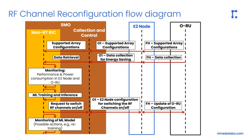The data is used to monitor the power consumption and performance related to various open radio unit configurations under different cell loads. The captured data are first used to train the machine learning model, and after the training phase, used for inference. In the inference phase, the ERAP in the non-real-time RIC formulates requests to perform RF channel reconfiguration based on the machine learning model output.